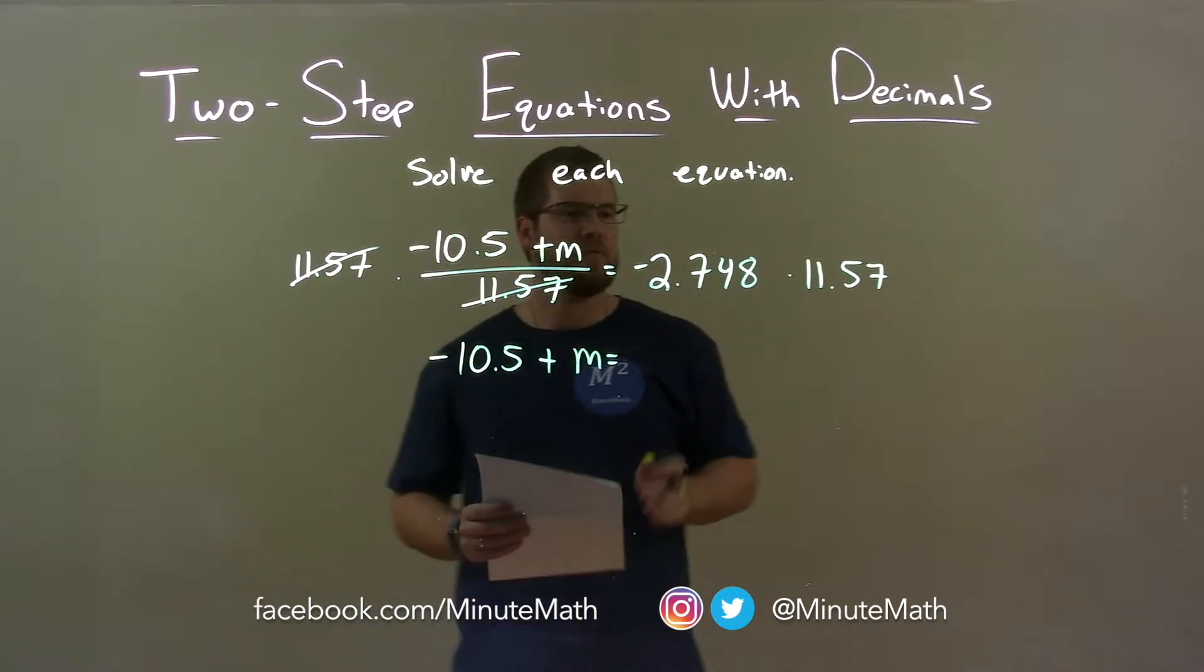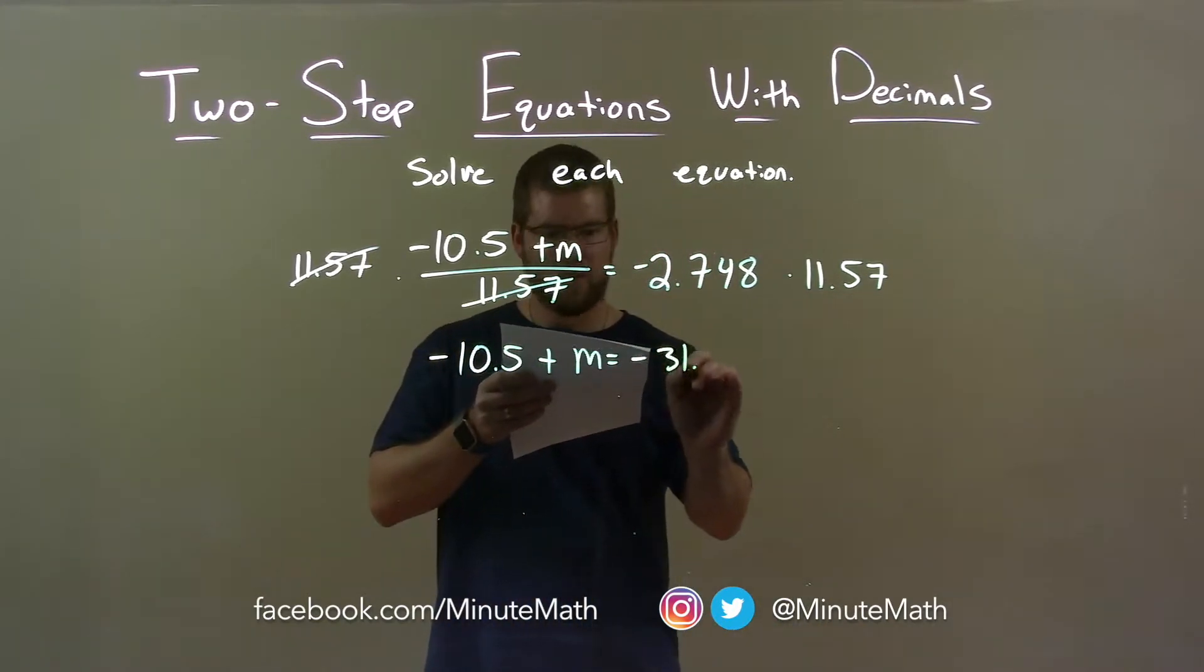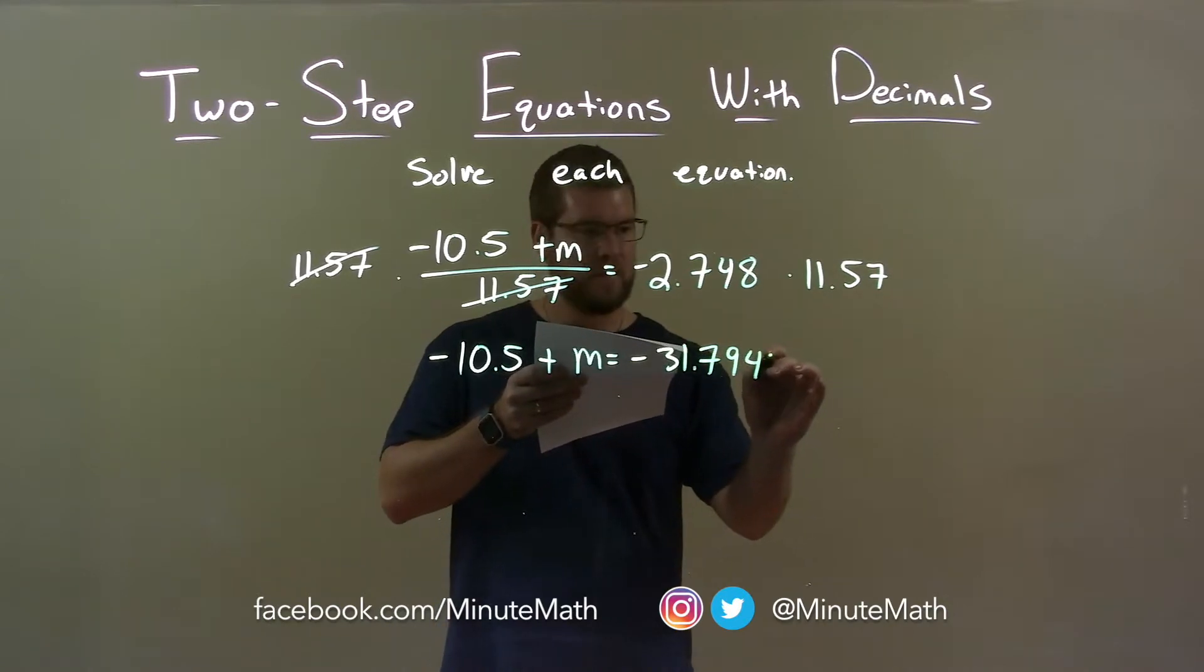On the right, negative 2.748 times 11.57 is negative 31.79436.